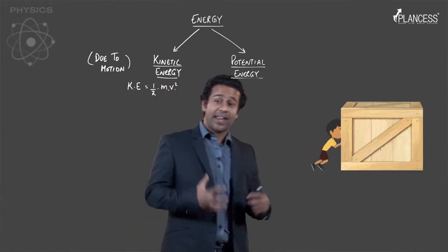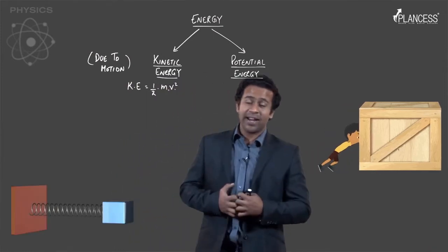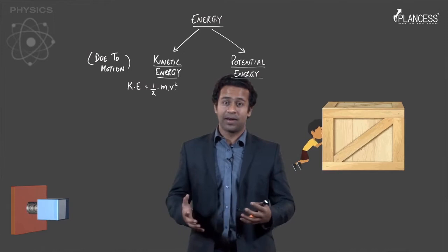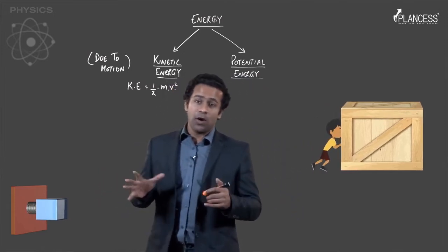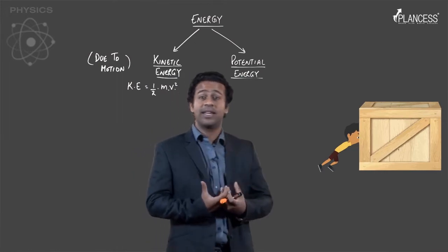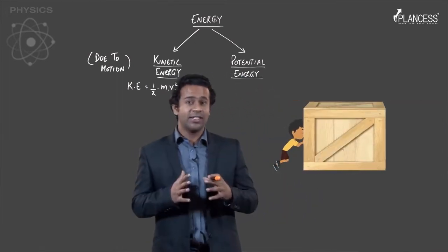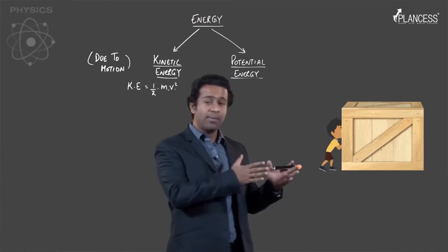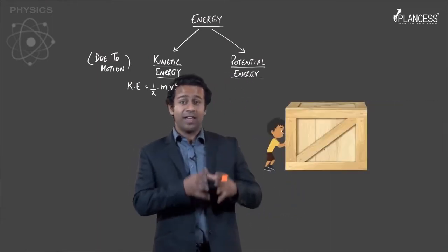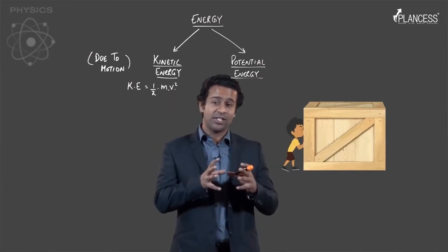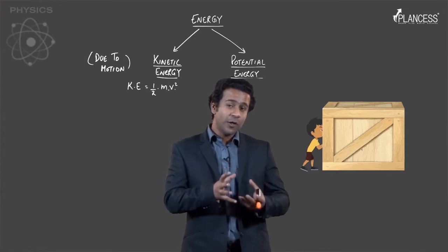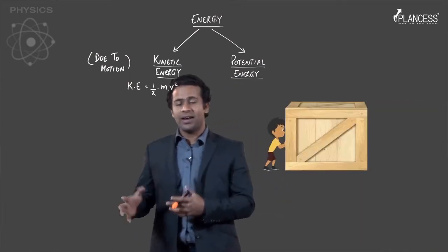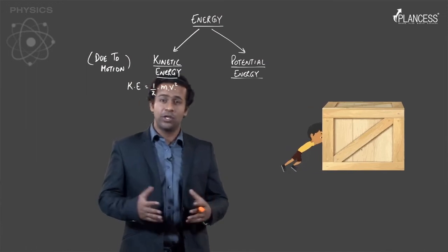As the man pushes the block, he is supplying through his work some energy to the block, which is contained by its motion. When this block moves it has some kinetic energy, and due to this kinetic energy, when it goes to some other point it could do some work — for example, it could compress a spring. So work done was stored in the form of kinetic energy, and we call it kinetic energy because it is due to motion.